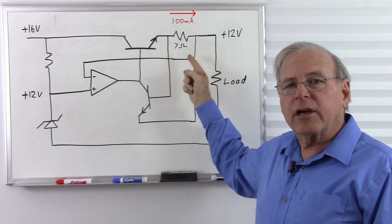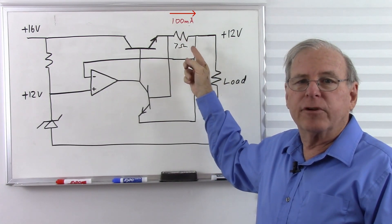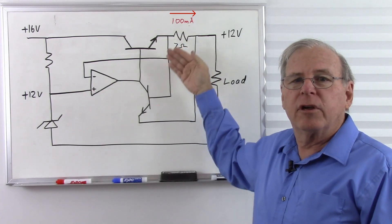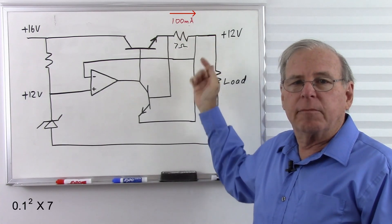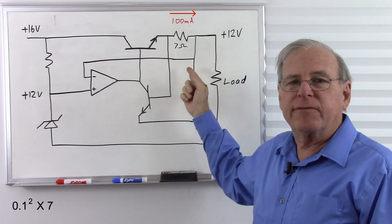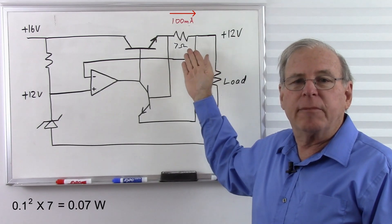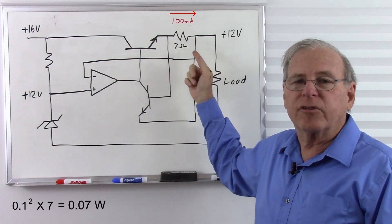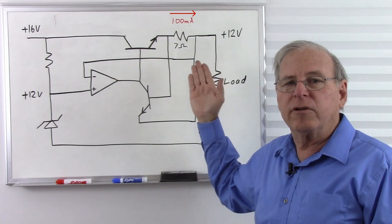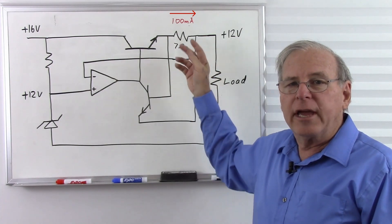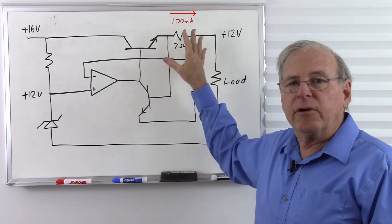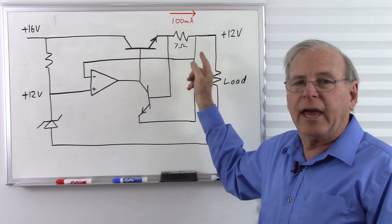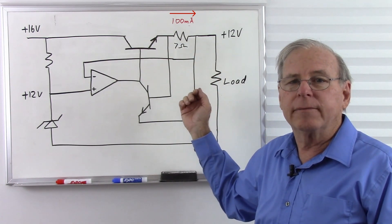To limit current to 100 milliamps, choose a resistor that gives 0.7 volts at 100 milliamps: 0.7 divided by 0.1 gives a 7 ohm resistor. This circuit limits to 100 milliamps and is independent of output or input voltage, since it only monitors current through this resistor. Power dissipation: 100 milliamps squared times 7 ohms is only 70 milliwatts — far less than the collector resistor approach. The two advantages are voltage independence and much lower power dissipation.